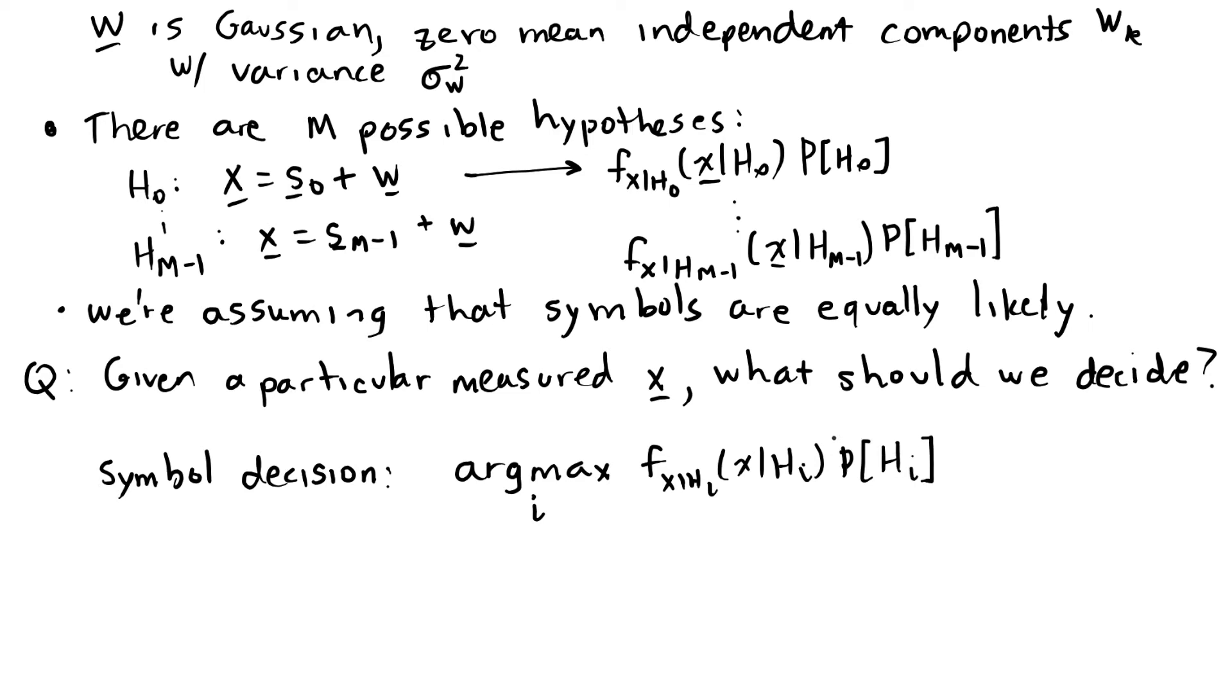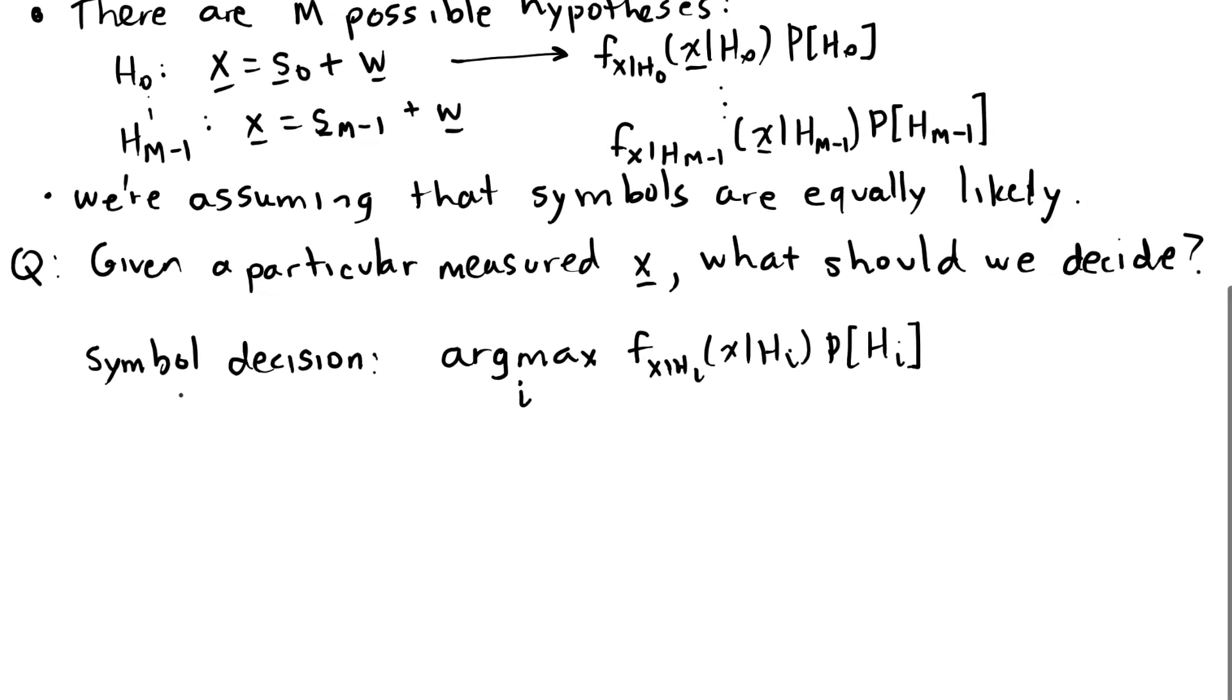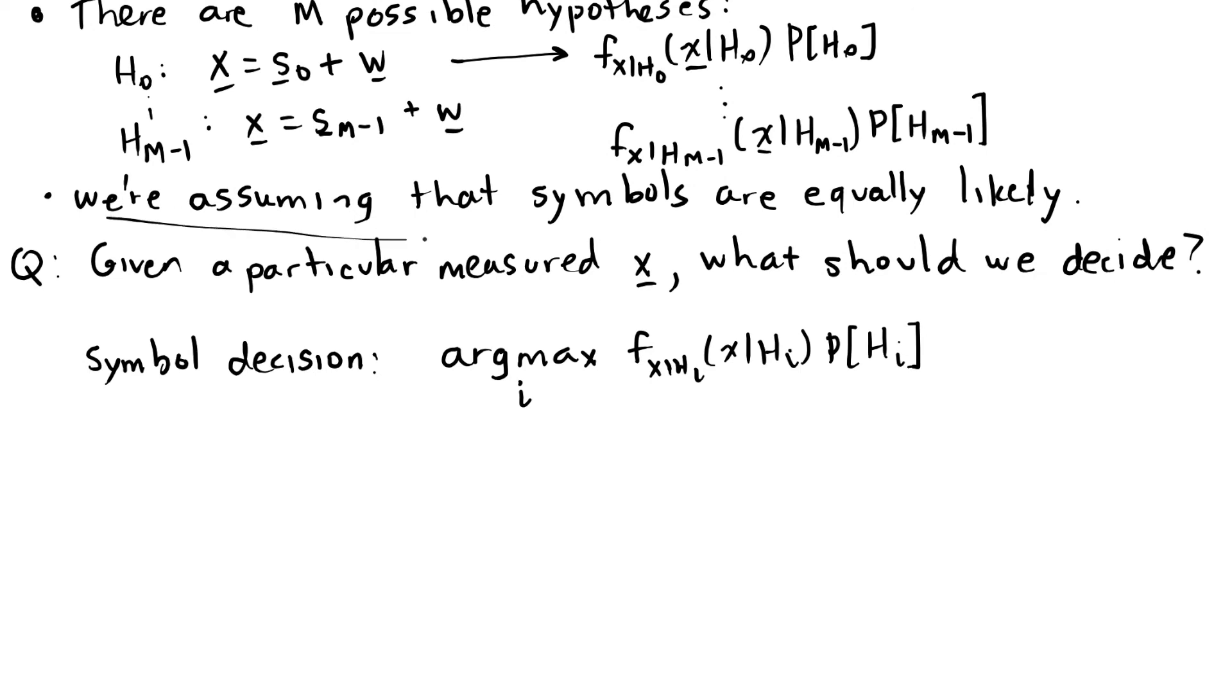This is the same rule that we had for the binary detection case, except now we have i could be anywhere from zero to capital M minus one. And in addition, we assumed that the symbols were equally likely. So that means that probability of H zero equals the probability of H one equals all the way up to the same as the probability of H of M minus one.